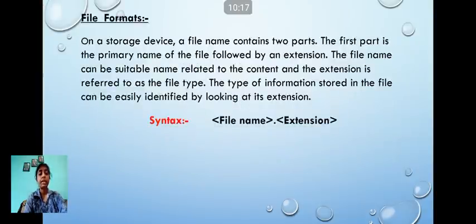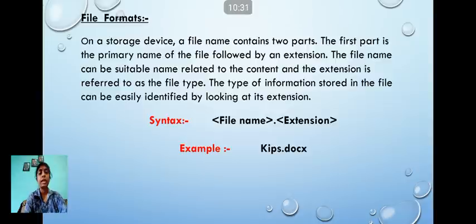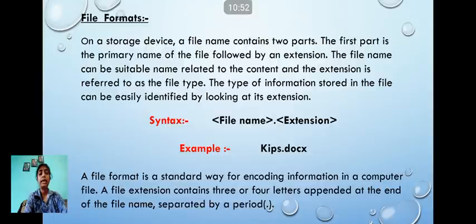The syntax of writing any file name is: first we write the file name, then a dot, then the extension. For example, kips.docx — here 'kips' is the name of the file, the dot separates the two parts, and 'docx' is the extension which tells us it is a Word file. A file extension contains three or four letters appended at the end of the file name, separated by a period.